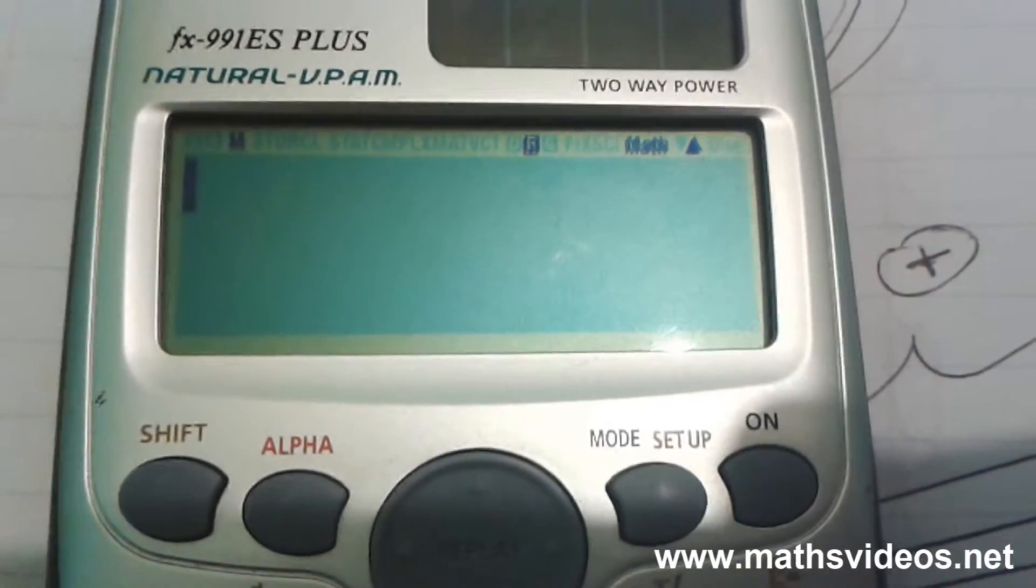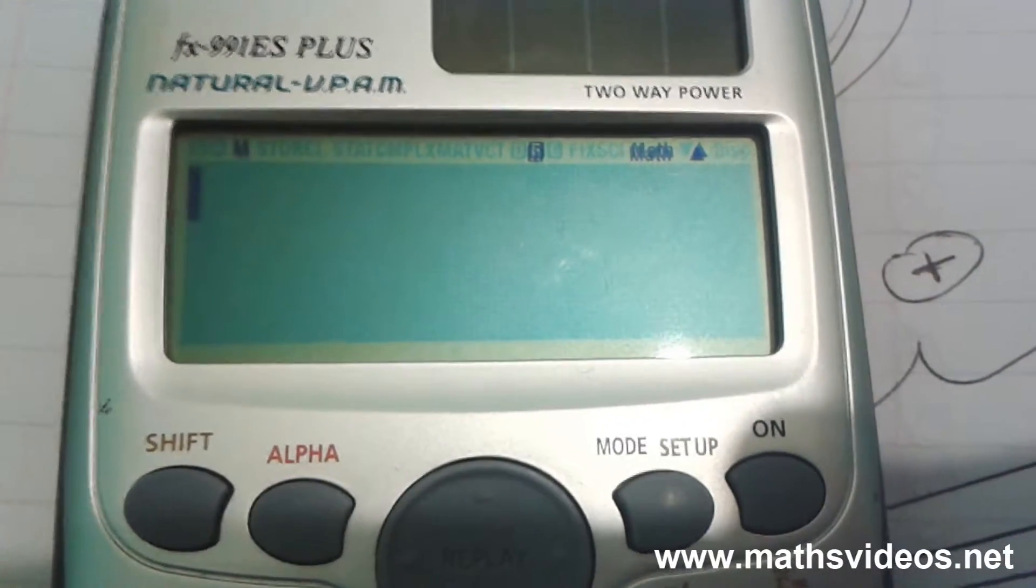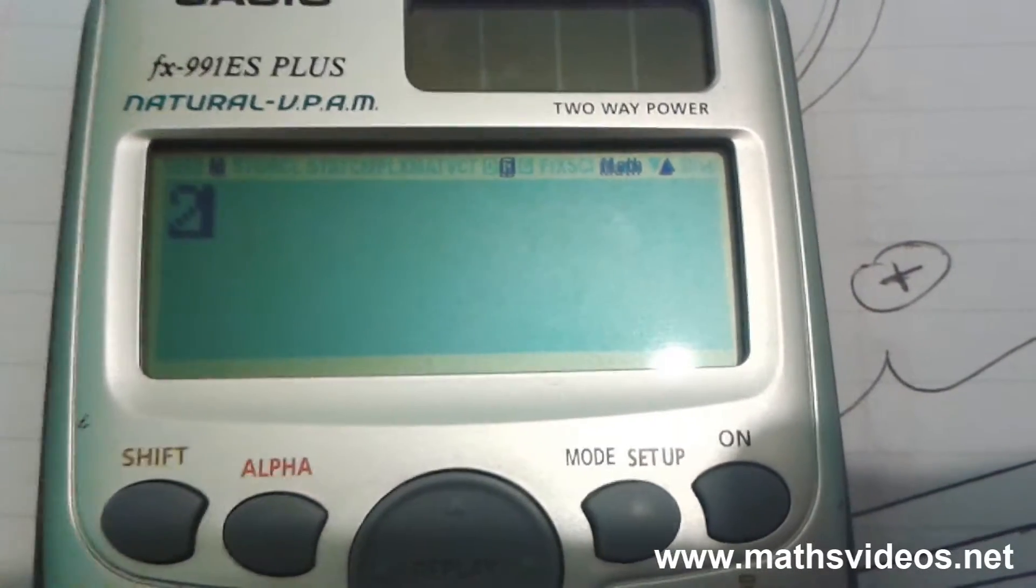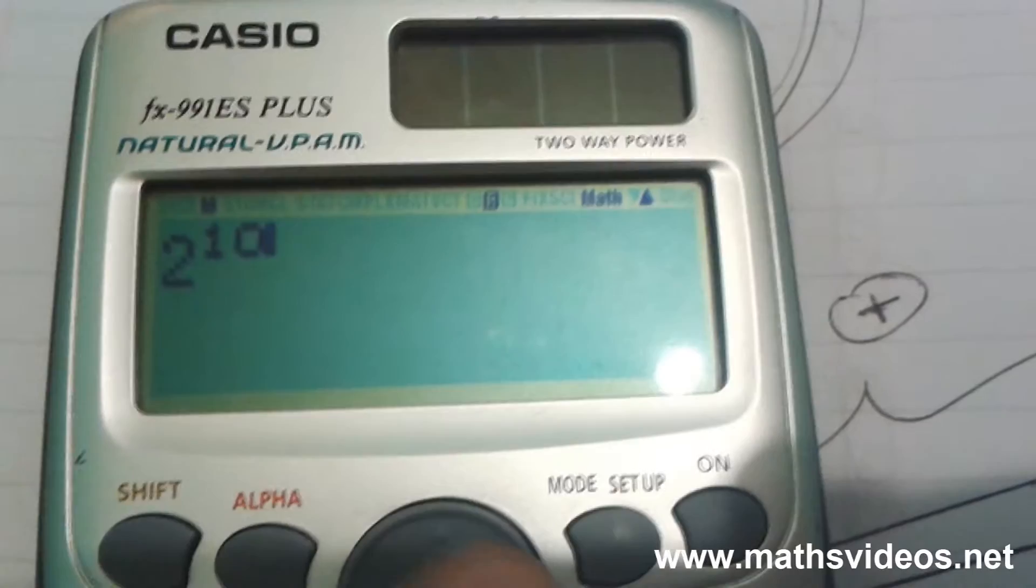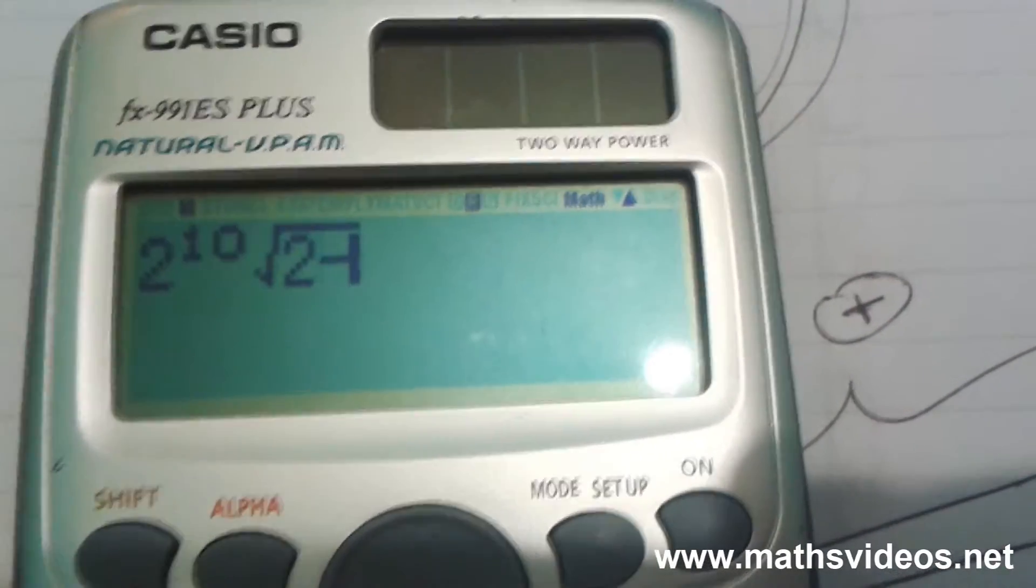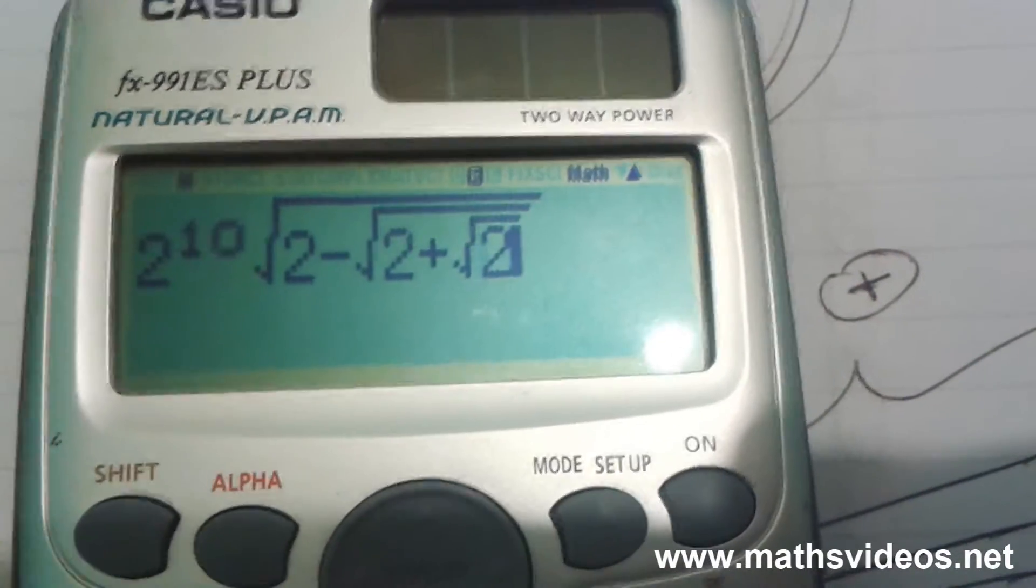To get a value similar to pi, we have to put this value into our calculator. 2 to the power of 10 multiplied by root 2 minus root 2 plus root 2.